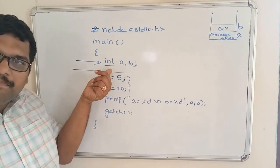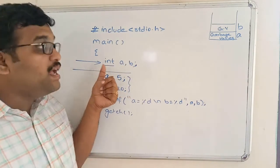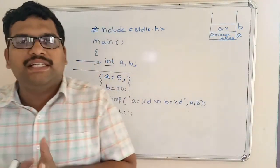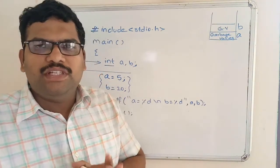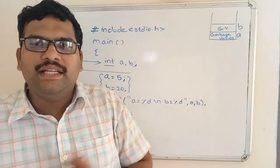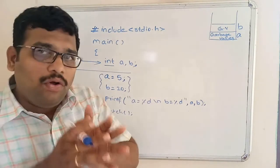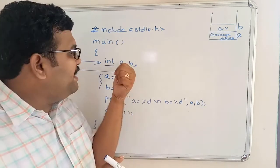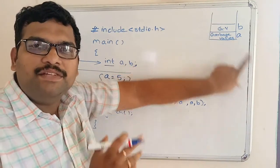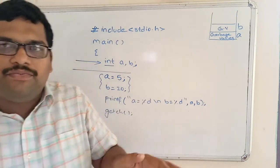After the first statement, two memory locations will be created which can accept only integer values, and those memory locations will be filled with garbage values. A garbage value is some dummy value — a random number allocated to the memory location that has no logical meaning. Any local variable that is declared but not initialized will have these garbage values.